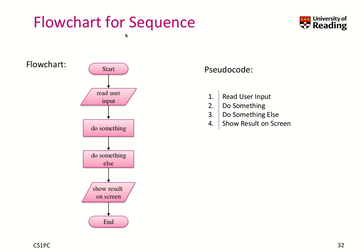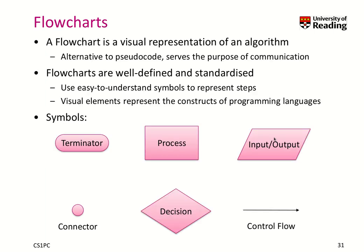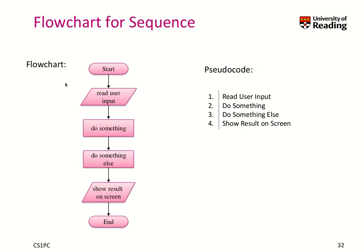Let's go through an example. For a simple sequence in pseudocode: read the user input, do something, do something else, then show the result on screen. This is a typical representation of many programs. In the flowchart: we start with the terminator/start symbol, read user input using the diagonal input/output symbol, then do something, do something else, show the result on screen, and end. It's basically a one-to-one representation.